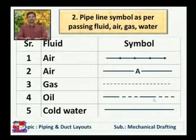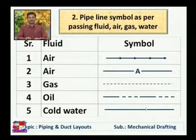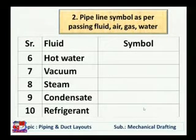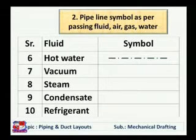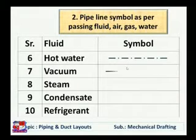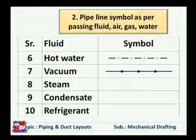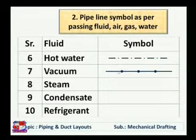Cold water — to represent that cold water is passing through the pipeline, just a thick line is drawn. It means that cold water is passing through the pipeline. If vacuum is there inside the pipeline — meaning no air, no gas, or no any fluid — then solid dots are put in a straight line at equidistance. It means that inside this pipeline, vacuum is there.